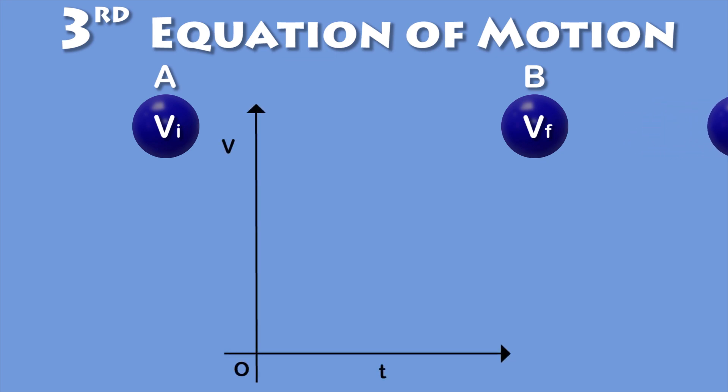Let's make a velocity-time graph of this situation. At point A the velocity of the body is vi which is OA on the graph. After some time t which is OD, at point B its velocity becomes vf which is BD on the graph.